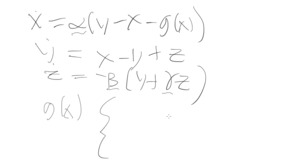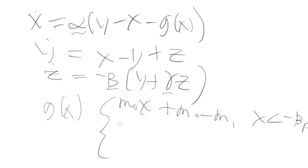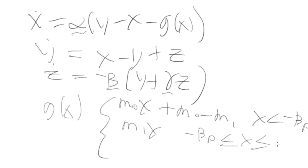Putting that all together, G of x is defined piecewise: M0 x plus (M0 minus M1) for x less than negative Bp; M1 x for negative Bp less than or equal to x less than or equal to Bp; and M0 x minus (M0 minus M1) for x greater than Bp. That is the other set of equations.